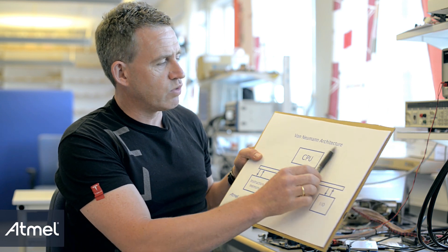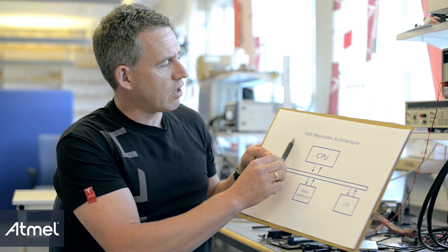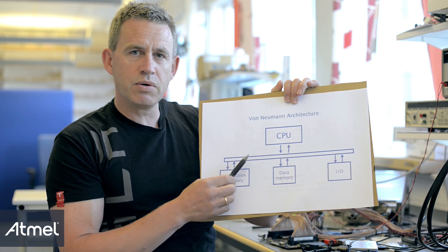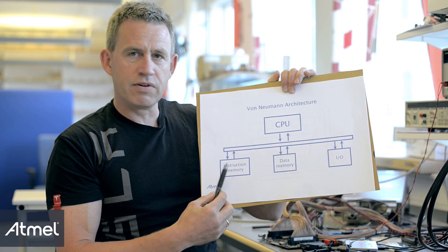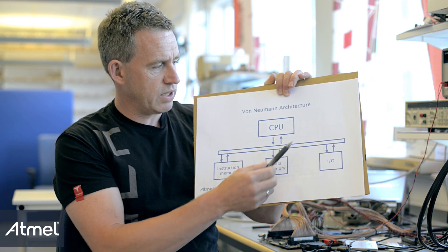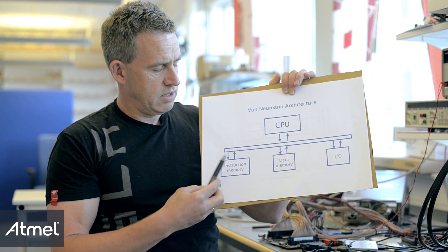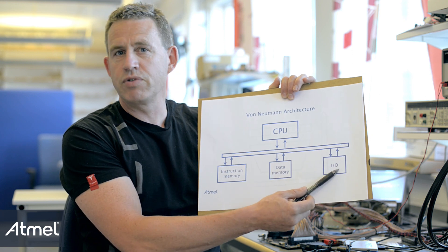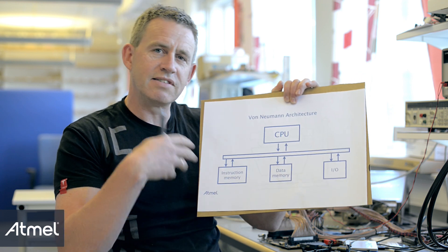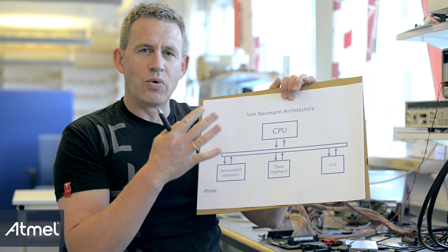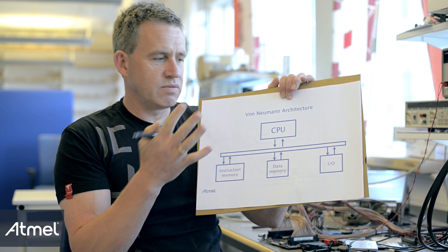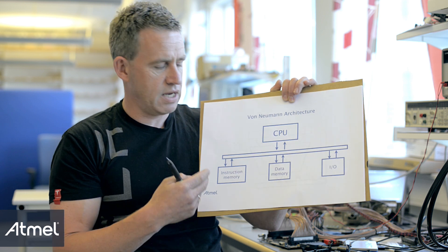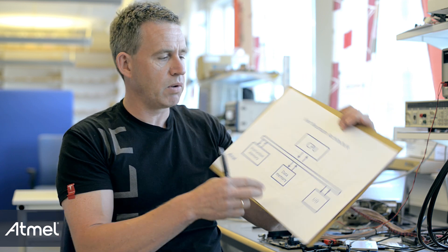Most RISC microcontrollers use what we call von Neumann architectures, which means that the CPU connects to the different memories with the same bus. So the instruction memory, the data memory, and the peripherals share the same bus, which means the microcontroller will have to wait before it can do a memory access if it's fetching an instruction, for example.